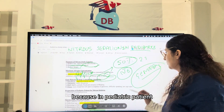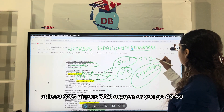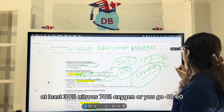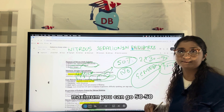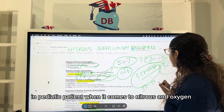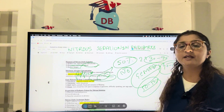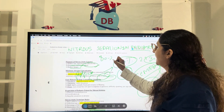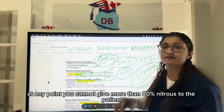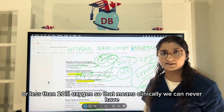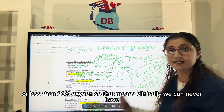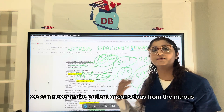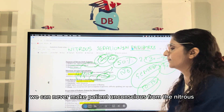We never administer that much nitrous to a patient. In pediatric patients, you can go 30% nitrous with 70% oxygen, or 40–60, with a maximum of 50–50. Even in adults, you go 60–40, 70–30, or a maximum of 80–20. At any point, you cannot give more than 80% nitrous or less than 20% oxygen. Clinically, we can never reach 105% nitrous, and that is why we can never make a patient unconscious with nitrous.